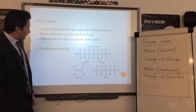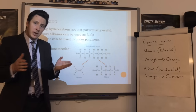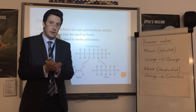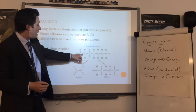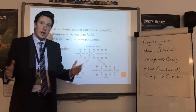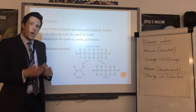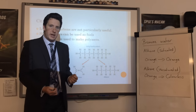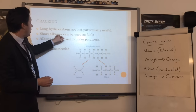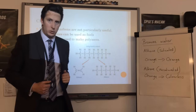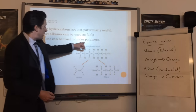Some products from fractional distillation are really long hydrocarbons with many carbons - like a seven-carbon chain shown here. These are hard to burn and produce smoky flames, so we don't want to use them as fuels. We want shorter hydrocarbons as fuels. We can also get alkenes from the process to make polymers. To get those shorter alkanes and alkenes, we do a process called cracking.